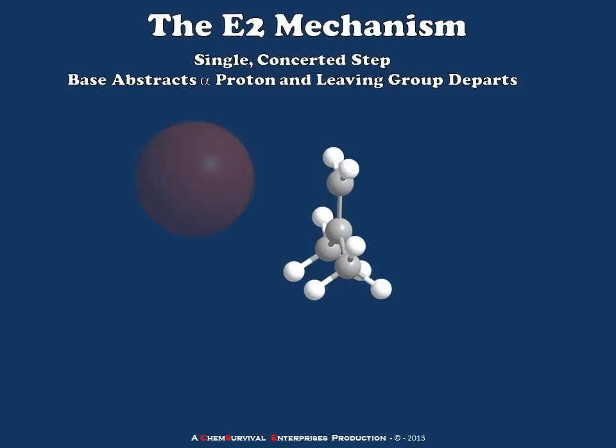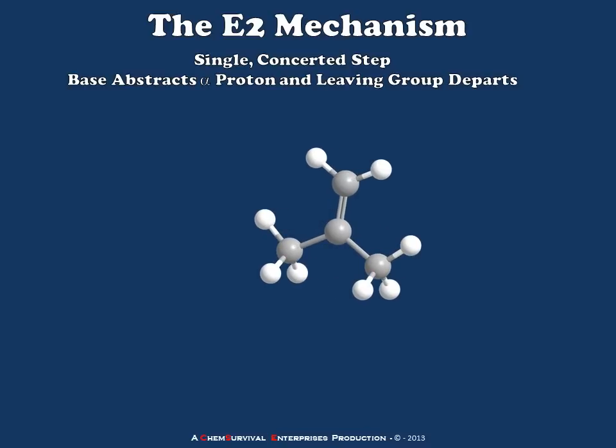You'll notice that the product formed in this case is exactly the same as the product which we formed in the E1 mechanism. This is because of how simple our substrate is. One could imagine quite easily how going through a carbocation intermediate versus having this mechanism occur in a single concerted step through removal of an alpha proton in the anti-conformation could create potentially different stereoisomers. Not to mention that since the E1 goes through a carbocation, there are potential rearrangement products — so even though I've created the same product in this case, it's important to note the differences in the mechanisms.